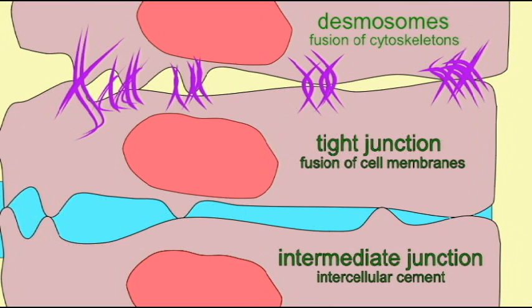So there are a number of junctions which can exist between epithelial cells which allow them to form more protective barriers.